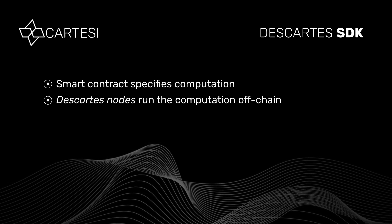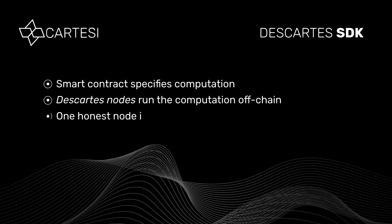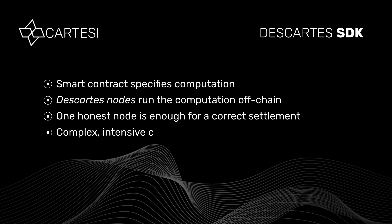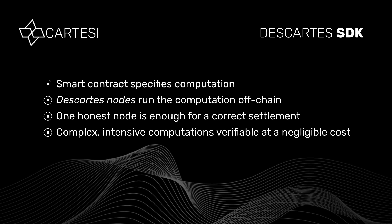Descartes nodes are either run by the dApp users themselves or by organizations they trust to represent them. Descartes ensures that, as long as your dApp includes at least one honest Descartes node, the correct result of the computation is delivered to the smart contract. Your smart contract was able to run a complex Linux-based computation in a decentralized way, without loss of security.